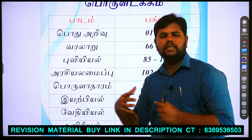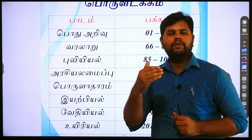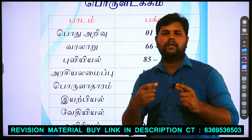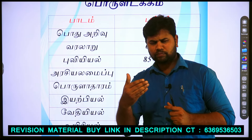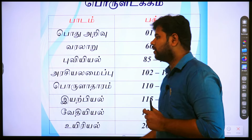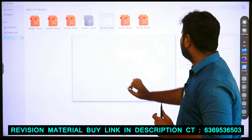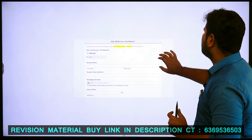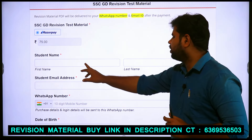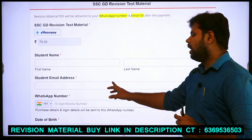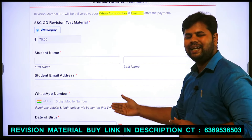If you look at this material, you will be asked questions. If you look at the revision material, you will find the buying link in the description. If you look at the basic details, you will find the basic details — open the link and you will find one page. Fill in the student name, last name, and email address, along with your WhatsApp number, date of birth, and address.